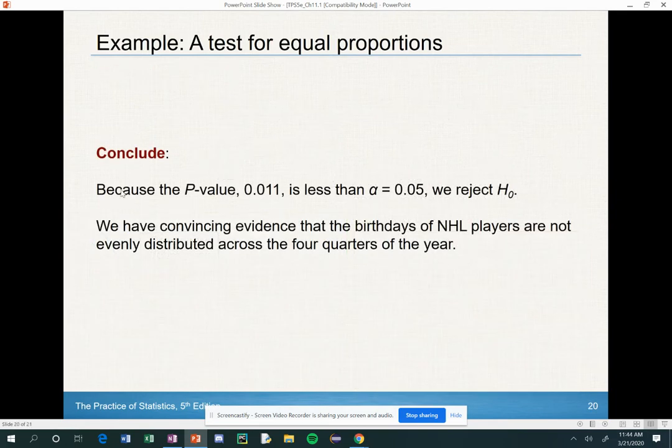Keep in mind, this is officially a chi-squared test. So what is our final conclusion? Because the p-value of 0.011 is less than the alpha of 0.05, we reject the null hypothesis.